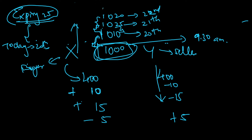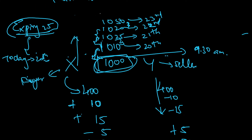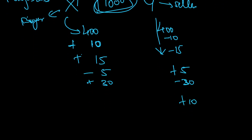Similarly, on the 23rd, assume the price goes to 1050 — that's a gap of 30. It has gone up, so it favors the buyer: plus 30 to the buyer and minus 30 to the seller. Then on the 24th, imagine the price comes down by 10, going to 1040. Because it is coming down, the seller will be happy — seller gets plus 10 and the buyer loses 10.